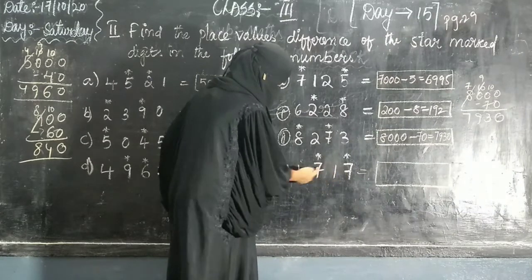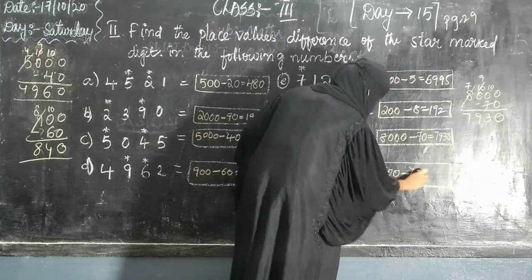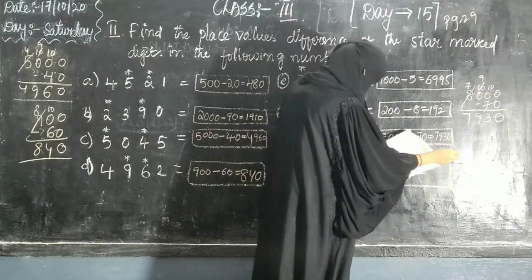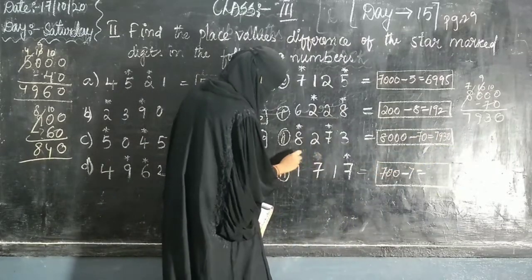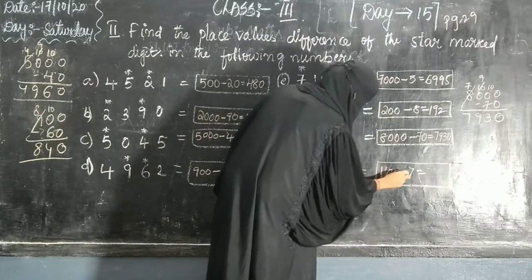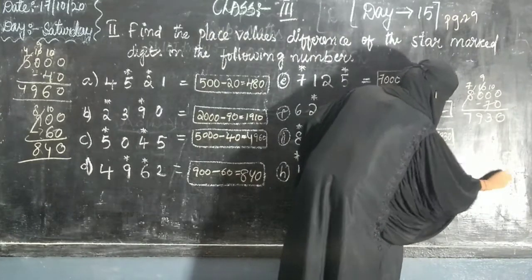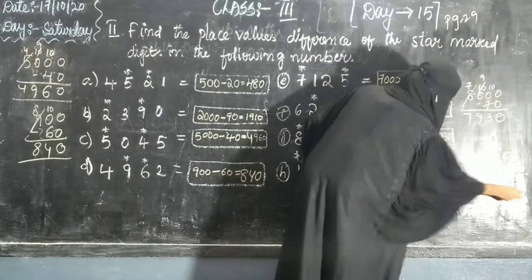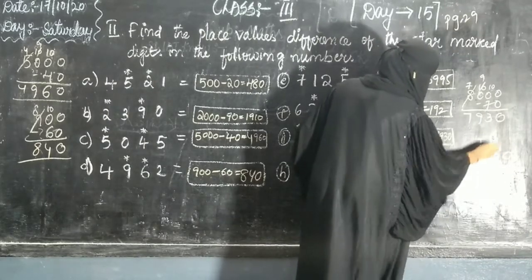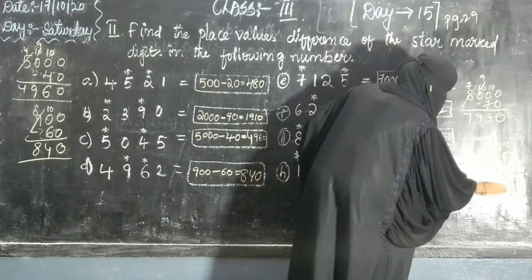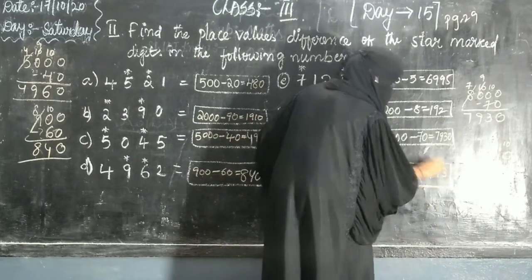Next, 1 stands for 100. 700 minus 7: we need to borrow. We borrow from the 1000s to get 10 in the tens place, then 10 minus 7 equals 3, 9 as it is, 9 as it is. The answer is 993.